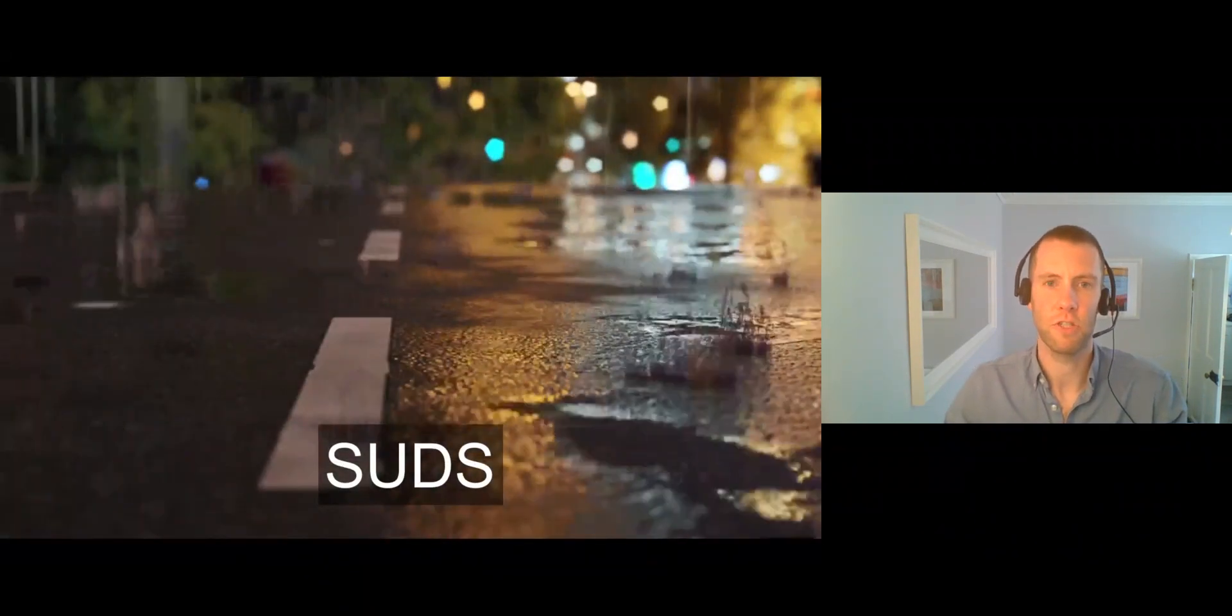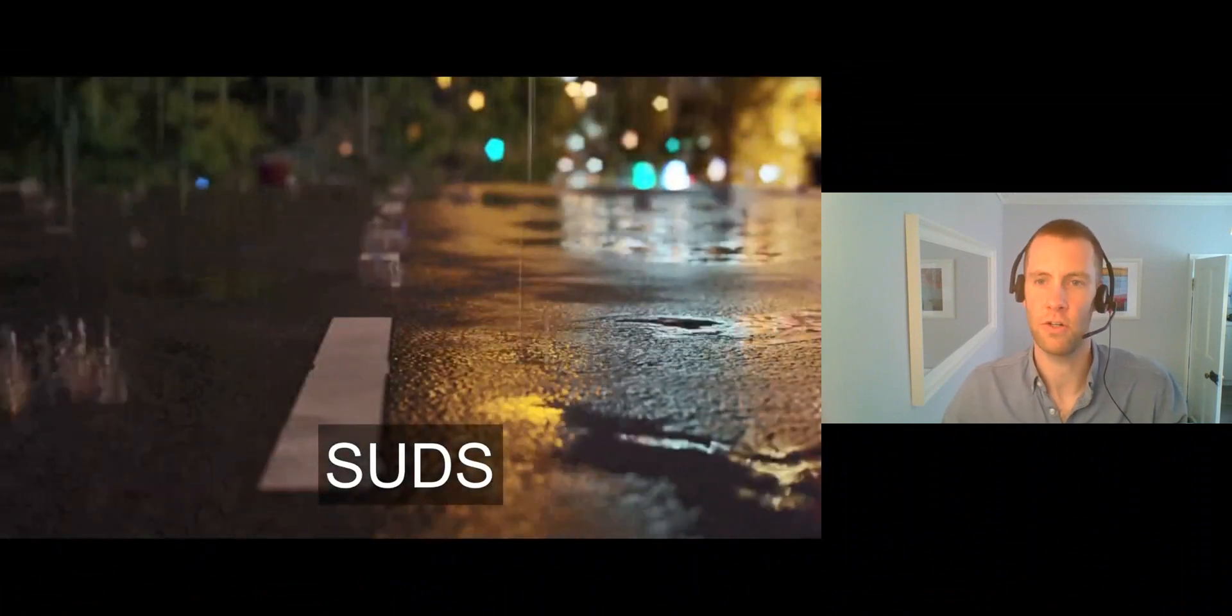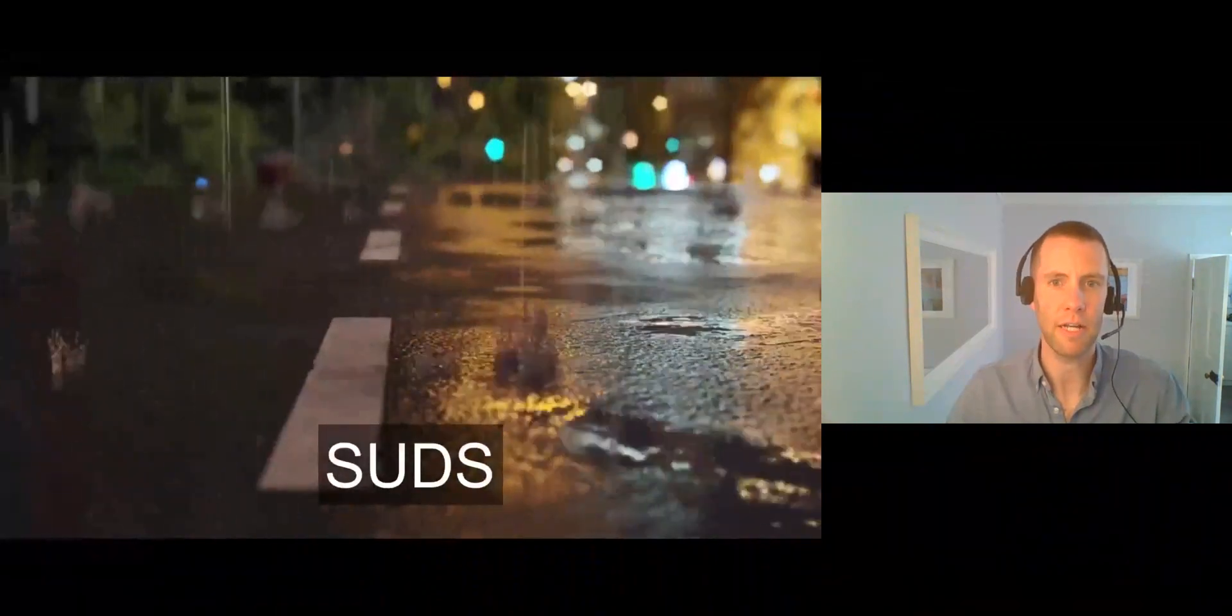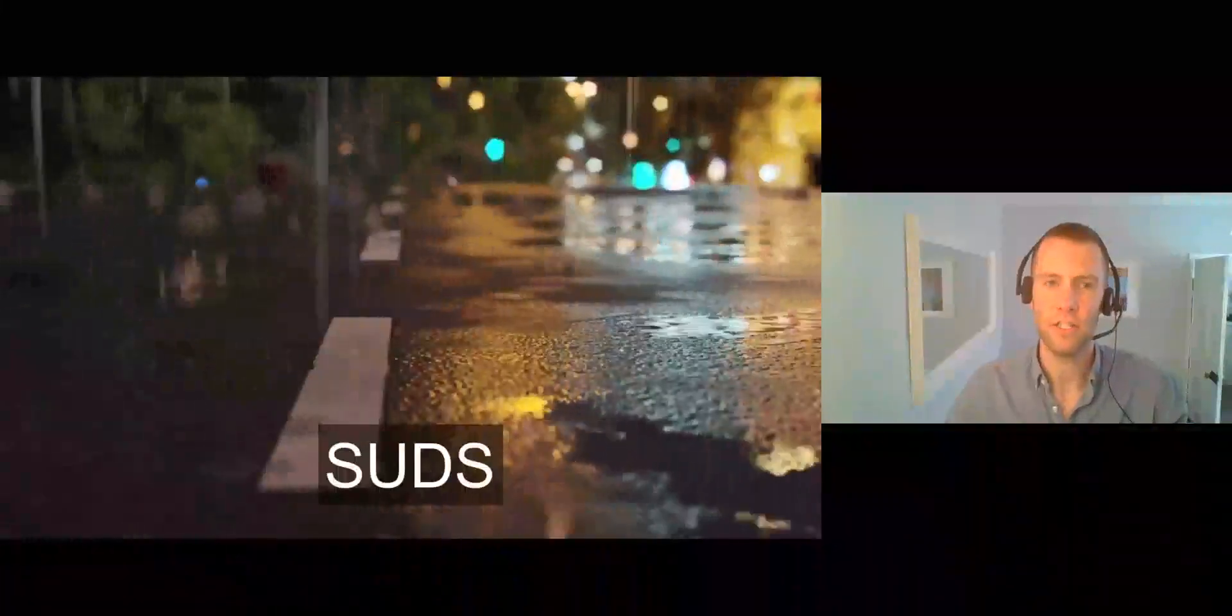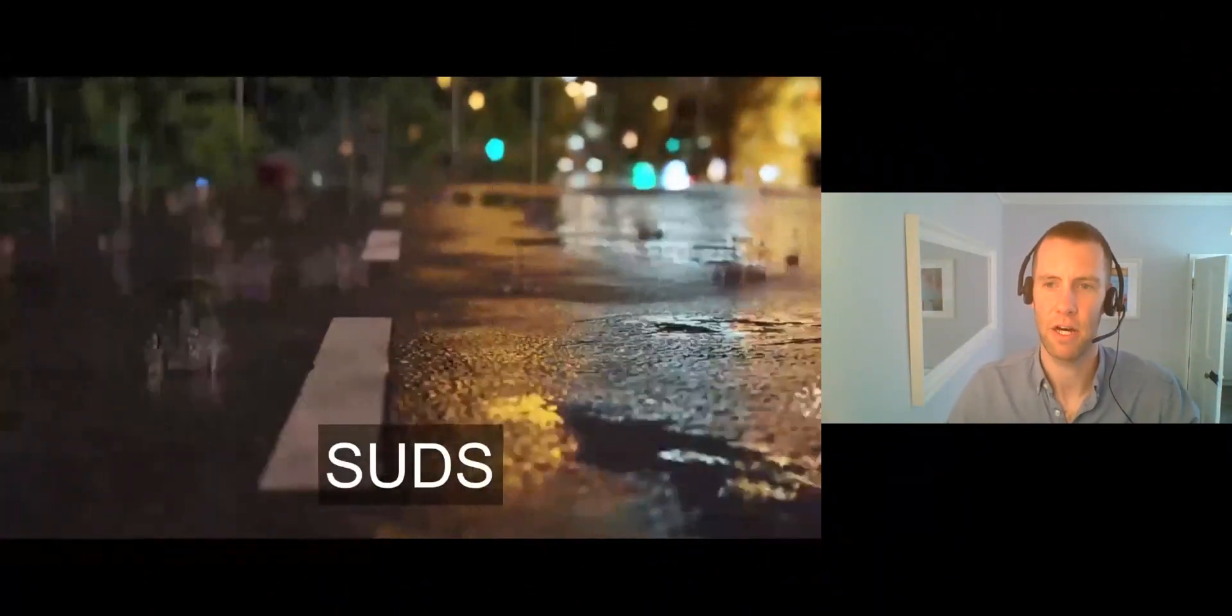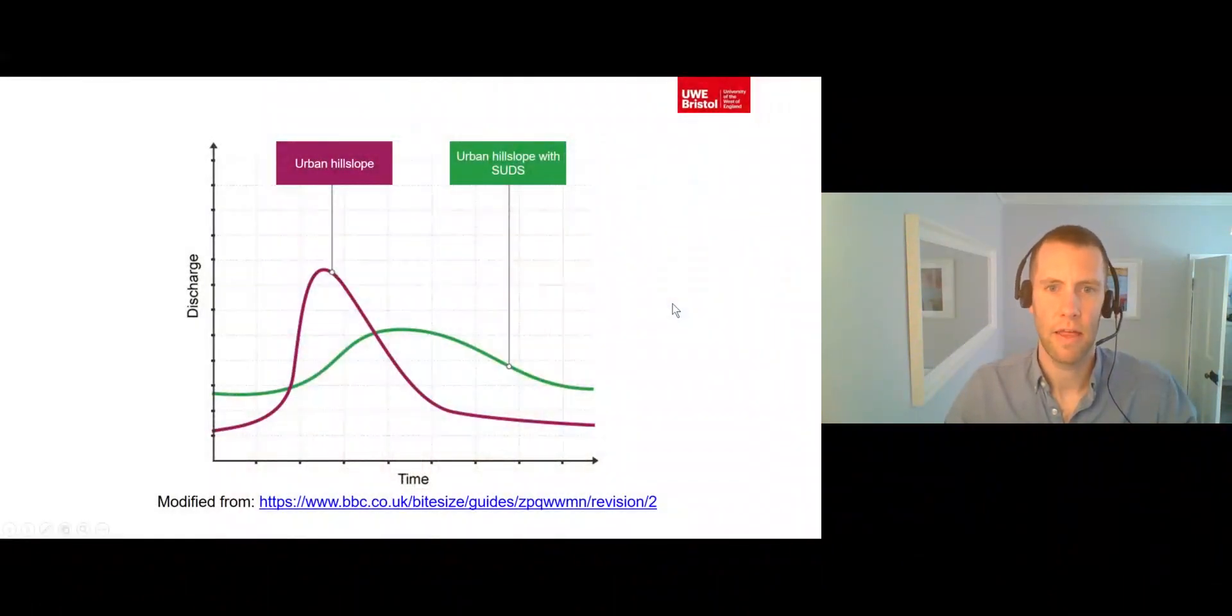It is possible for us to reduce the impact of urban areas on drainage basin hydrology through the use of sustainable urban drainage systems, otherwise known as SUDs. These are a range of techniques, including green roofs and pervious pavements, which are designed to reduce peak hill slope runoff rates by increasing the infiltration capacity of the hill slope surface. As a result, their use reduces the flashiness of a drainage basin. An additional benefit of SUDs is that they also reduce water pollution entering river systems.